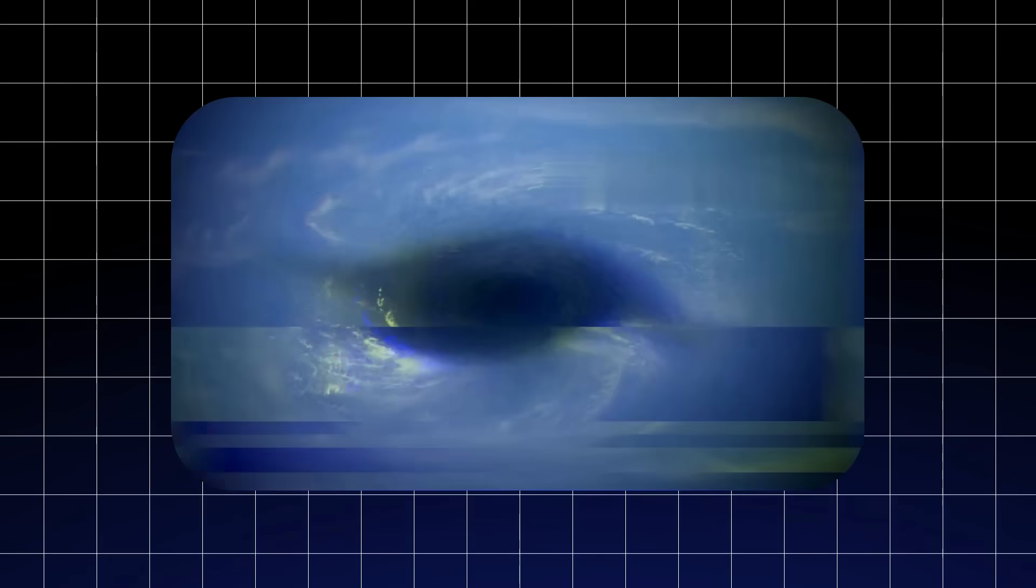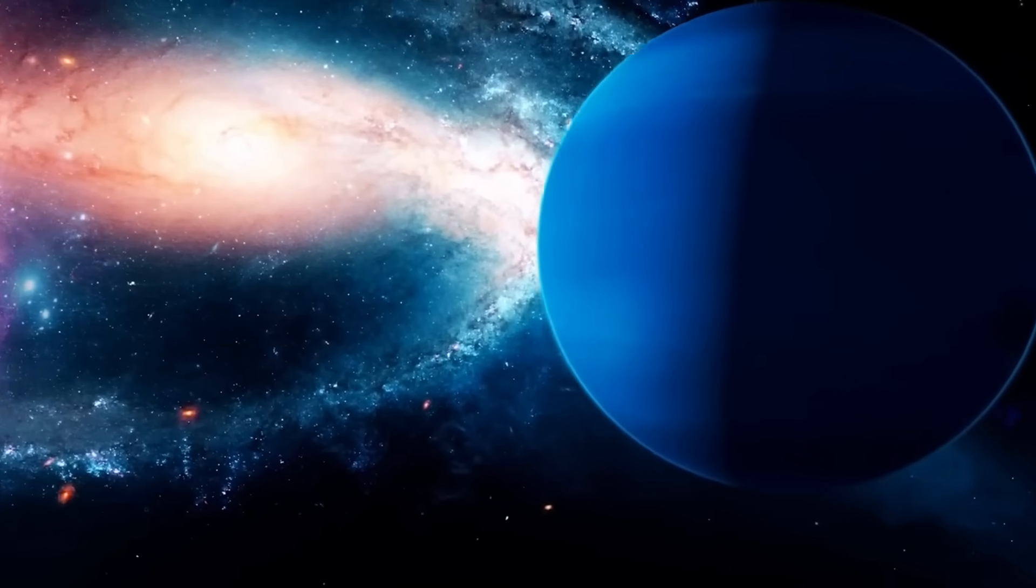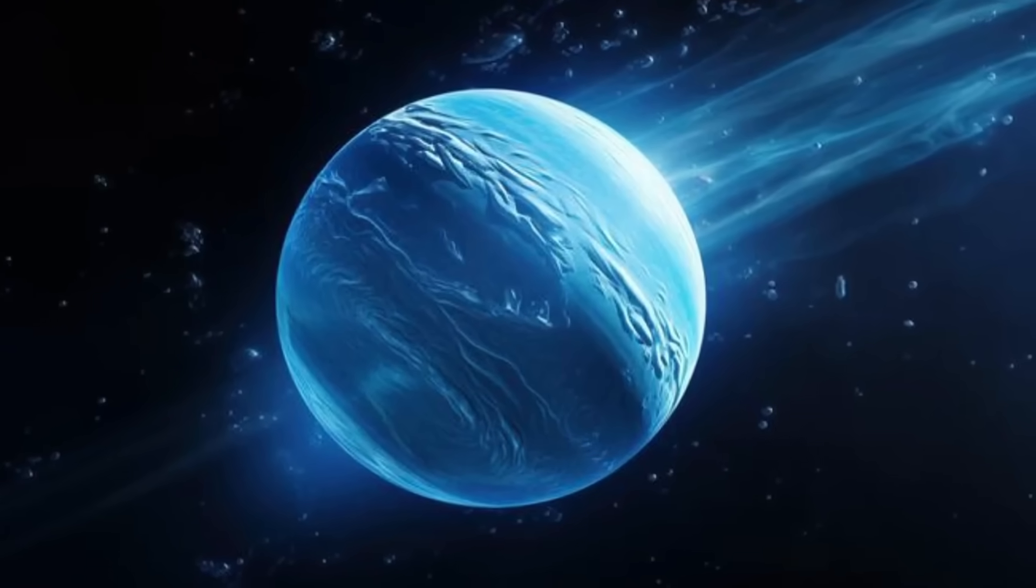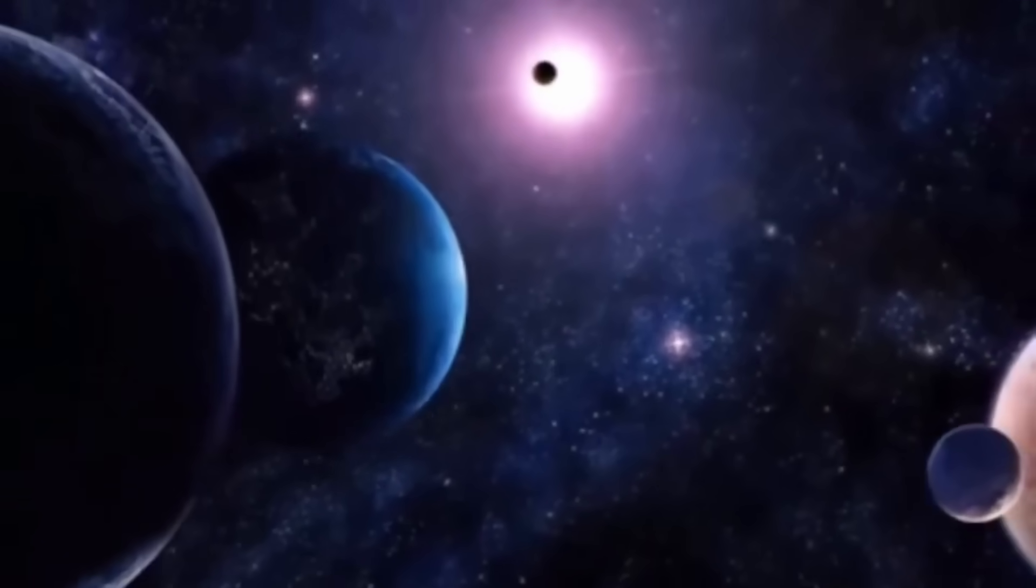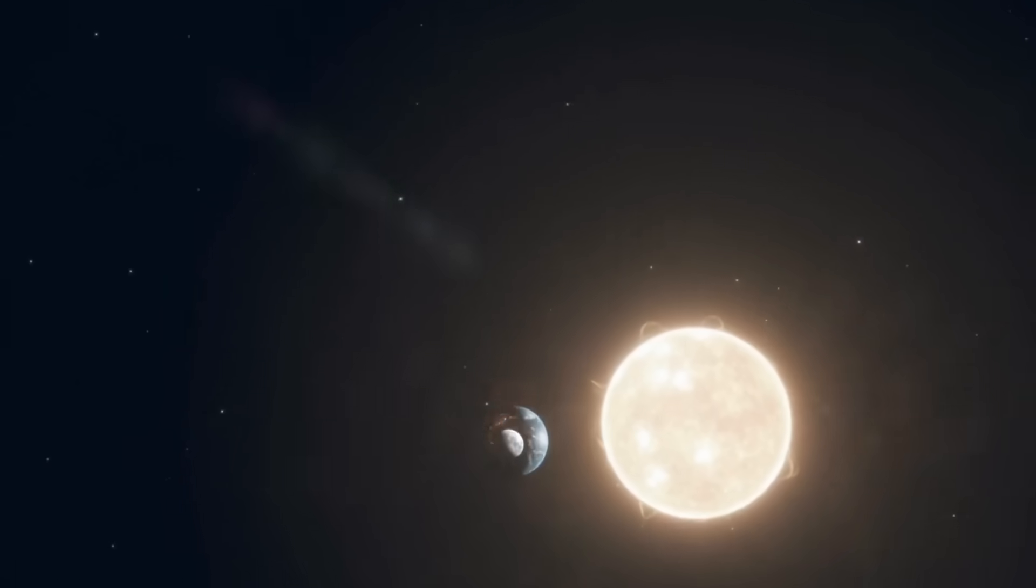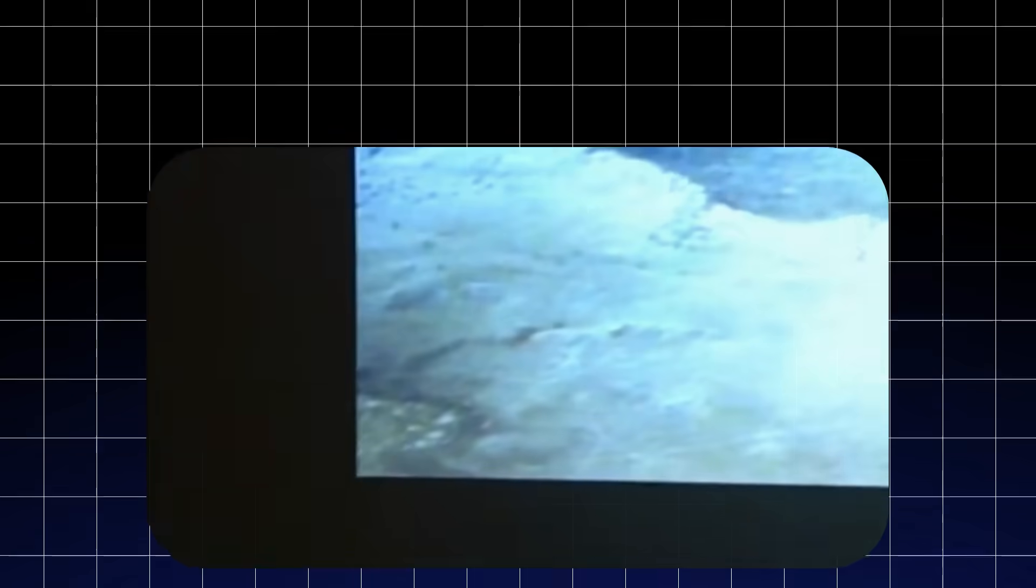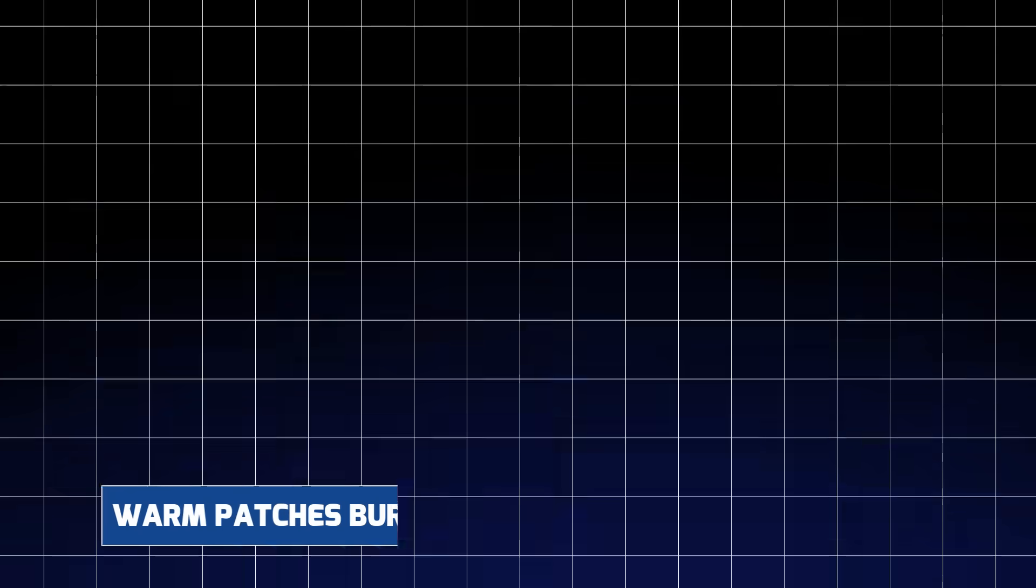Instead of a smoothly differentiated interior with a rocky core, a layer of icy water and ammonia, and a gaseous outer envelope, Neptune appears to be host to a mosaic of interacting zones, with intermittent regions of plasma-like materials and inexplicably warm patches buried beneath the cloud tops.